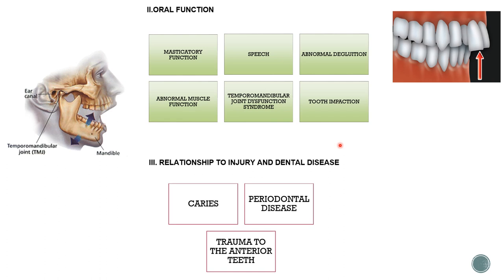Regarding injury and dental disease — trauma to anterior teeth is a concern when upper front teeth are more proclined and forwardly placed, making them more prone to injury. Caries is another consequence — malocclusion makes it difficult to clean teeth properly, increasing caries risk. Plaque accumulation from poor cleaning leads to periodontitis and gingivitis. Please refer to my previous video on gingival recession to understand the full sequence of periodontal disease.